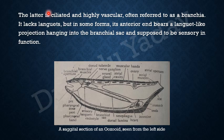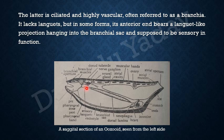The dorsal lamina is ciliated and highly vascular, and is also known as branchia. It lacks languets — as you know, in Pyrosoma the dorsal lamina had 10 to 12 dorsal languets hanging from it. Here there are no languets throughout the length, but in some forms there is one sensory languid present on the anterior region of the dorsal lamina, a languid-like projection hanging into the branchial sac, supposed to be sensory in function.